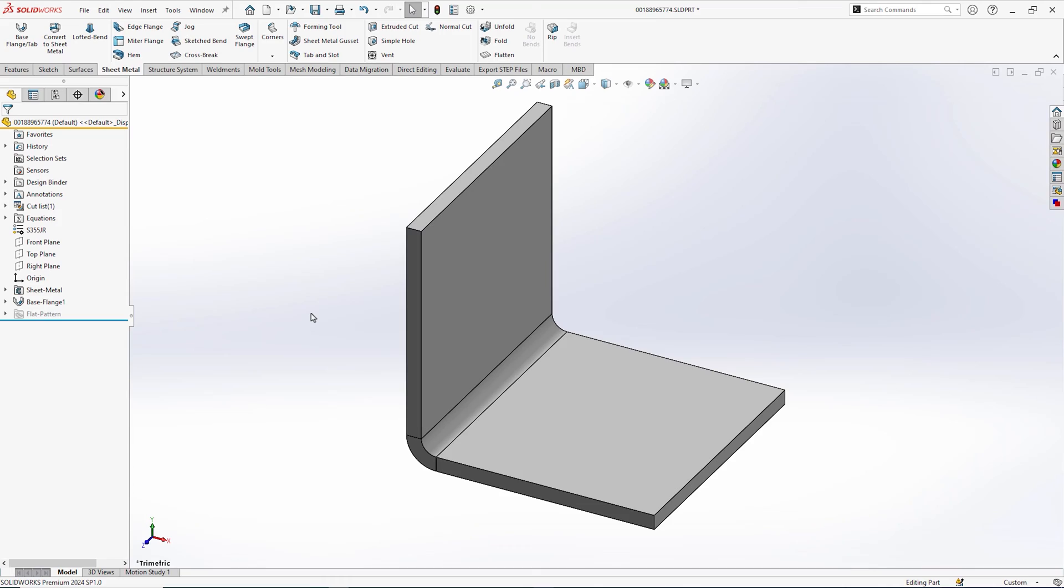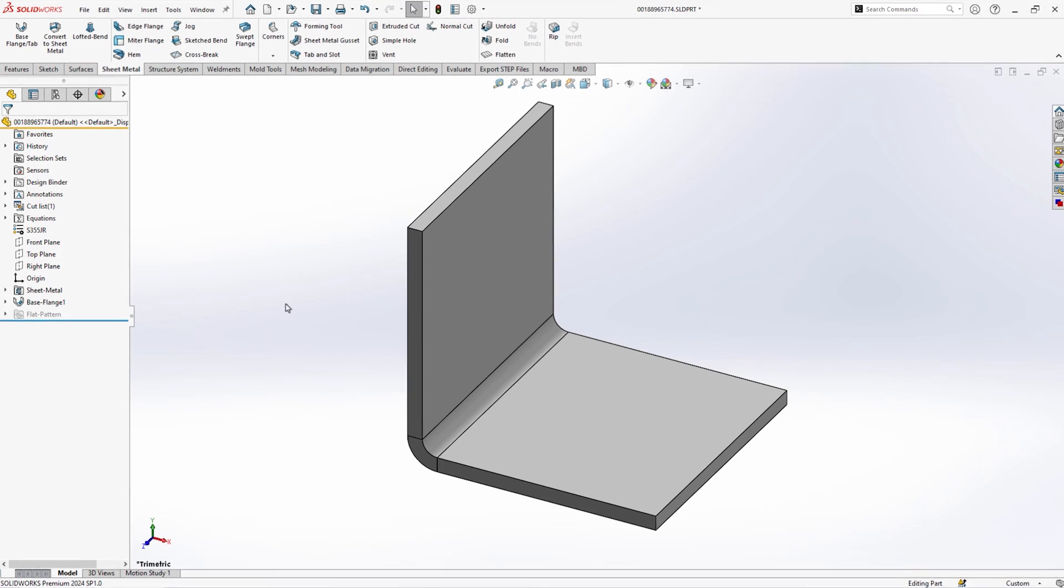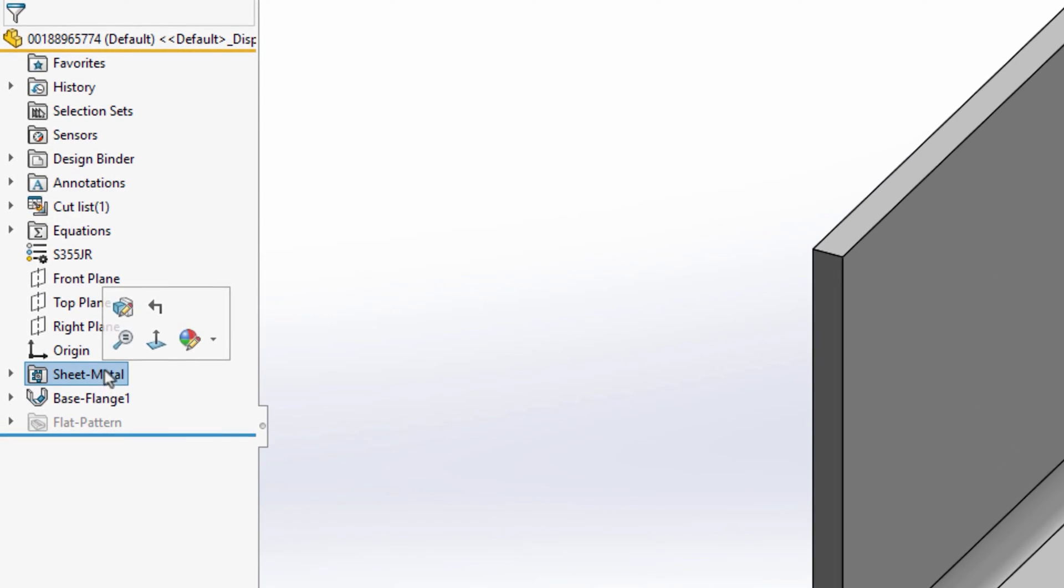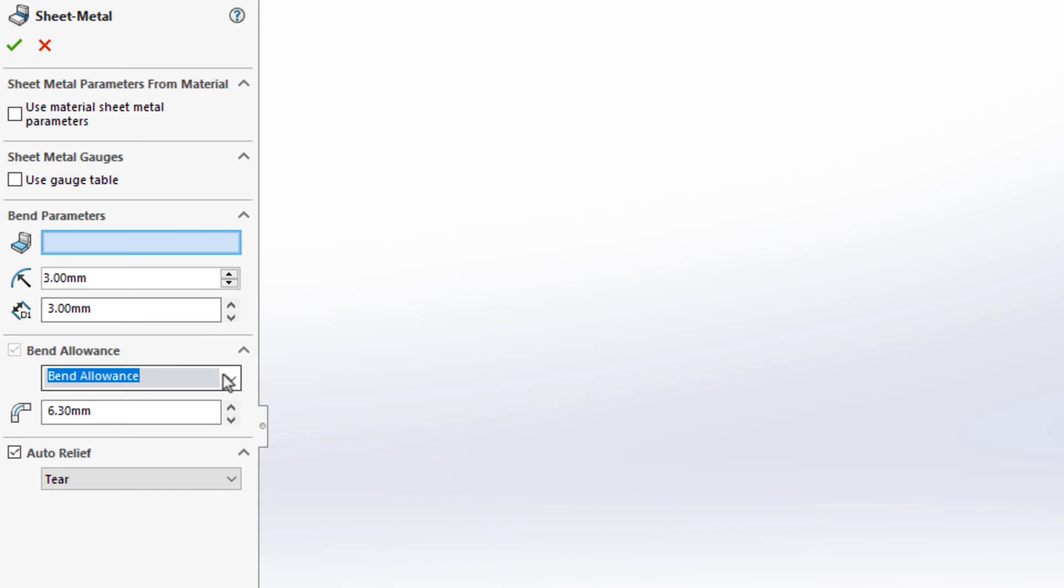Why is my sheet metal flat pattern length incorrect? This is a common question I hear from SOLIDWORKS users. The answer, however, is surprisingly simple. Almost certainly, the calculation method you are using differs from the calculation method used by SOLIDWORKS. Although the answer is simple, that probably doesn't help solve the problem, so let me elaborate.